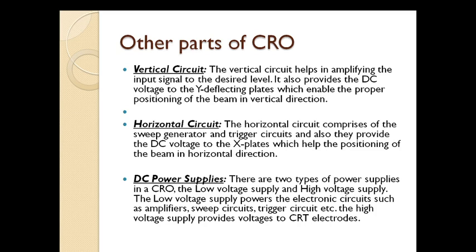The other parts of CRO include vertical and horizontal circuits, which are amplifiers. The vertical amplifier amplifies the signal going to the vertical Y-plates. The horizontal amplifier amplifies the signal going to the horizontal deflecting plates. Vertical circuits also provide DC voltage to the Y deflecting plates, enabling proper positioning of the beam in the vertical direction.